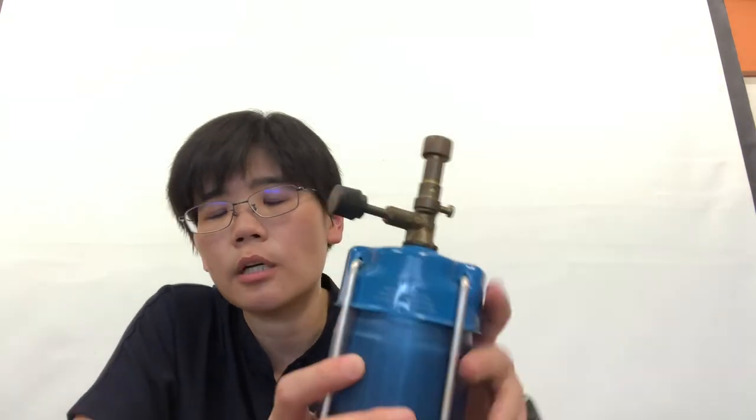To turn off the Bunsen burner, you shut the gas. Turn off the gas valve. So that's how we turn on and use the portable Bunsen burner in the lab. That's how we turn on and turn off the Bunsen burner. Thank you.